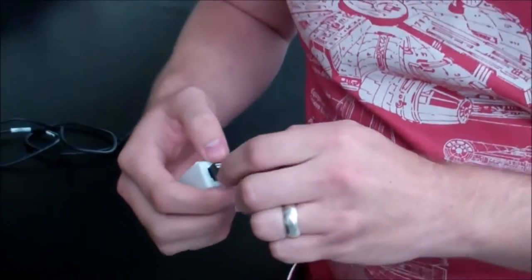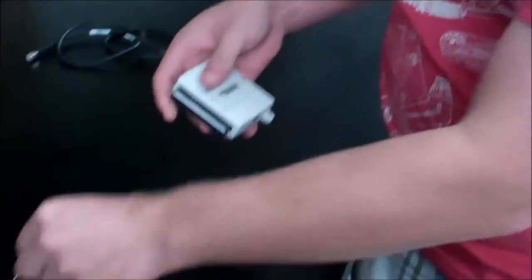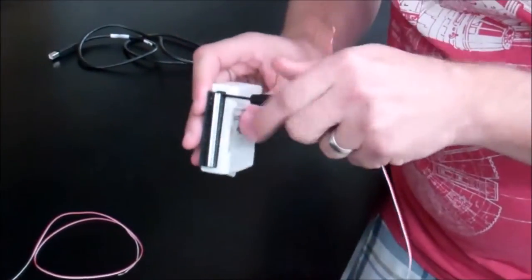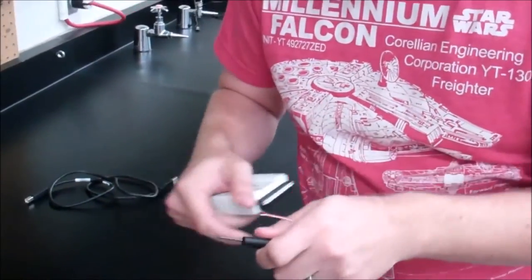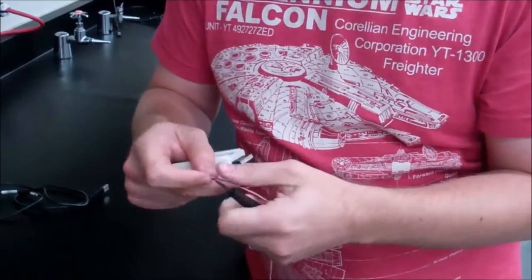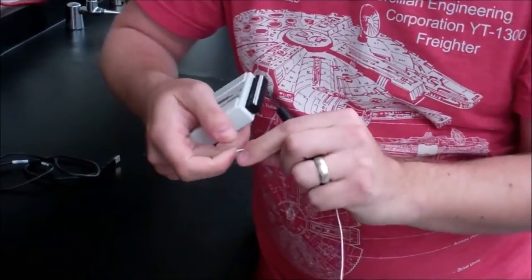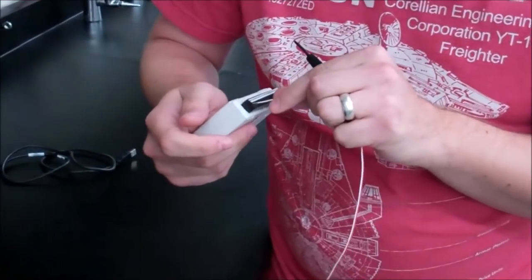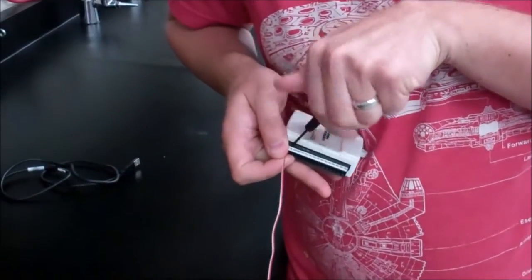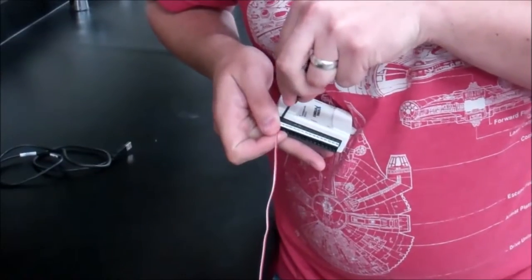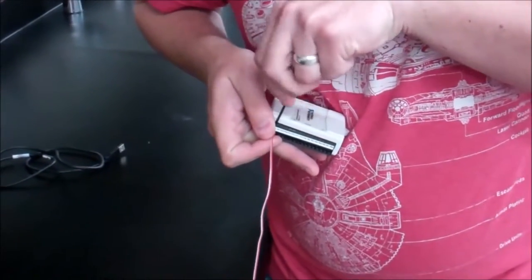This is going to supply the power to our Wheatstone Bridge circuit. You need to make sure that you have all of the accepting connectors to the DAQ down so you can put the wires in. Put the wires in and tighten them. Make sure it's nice and tight.